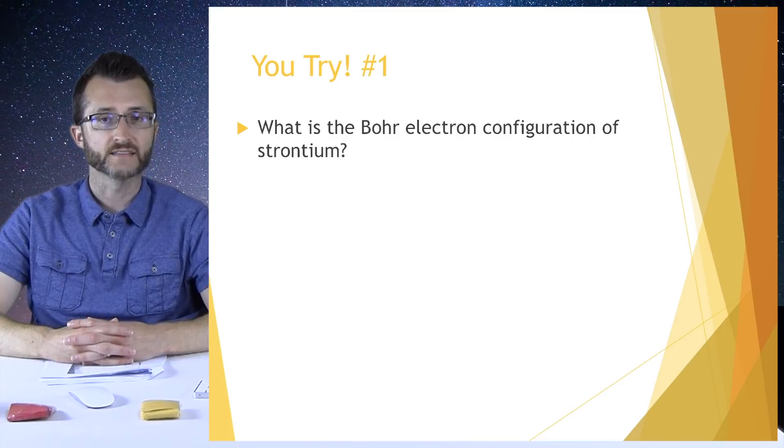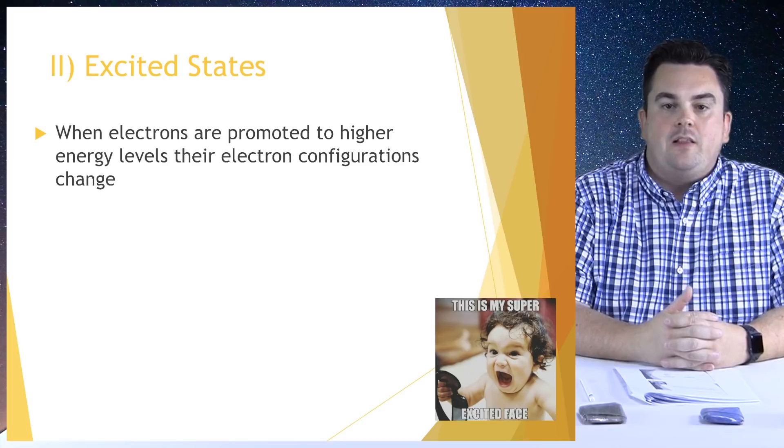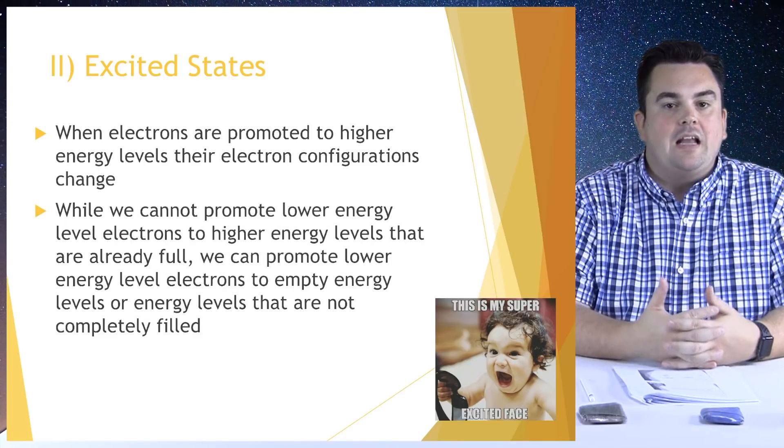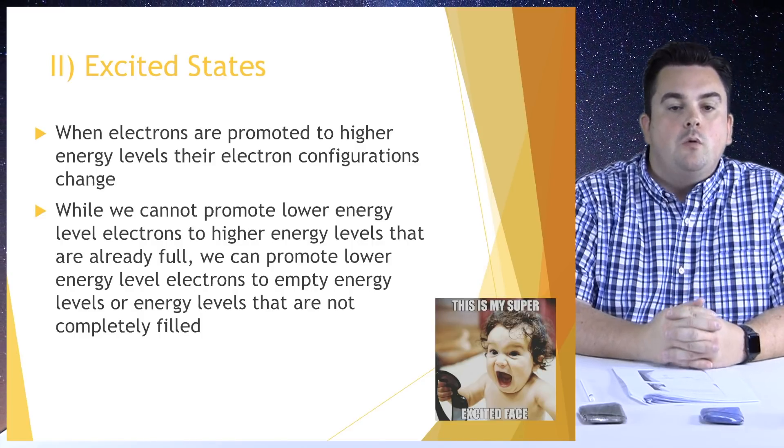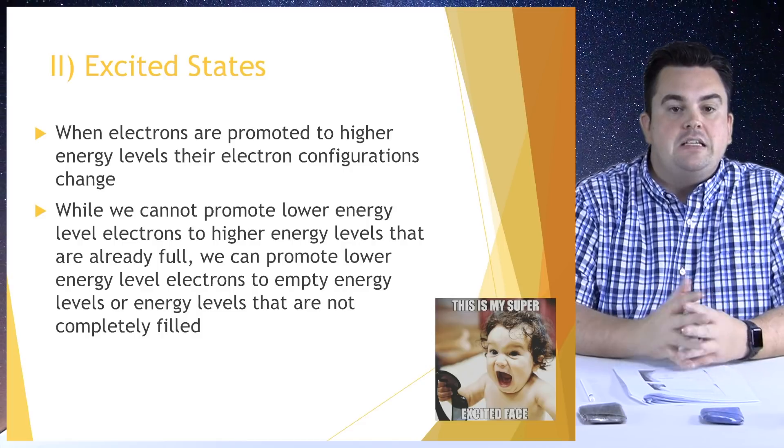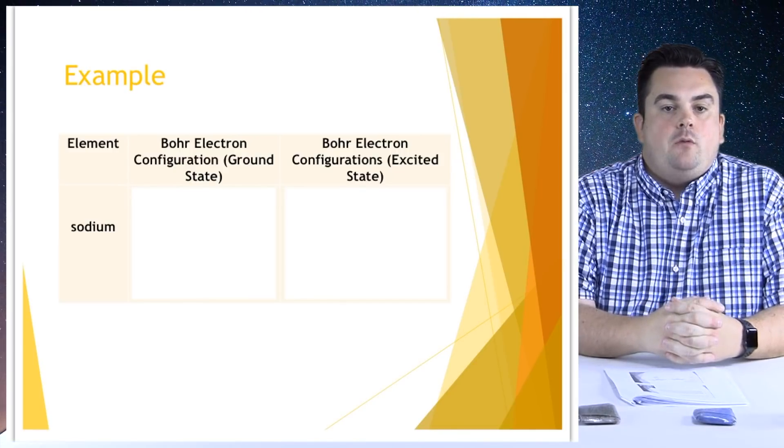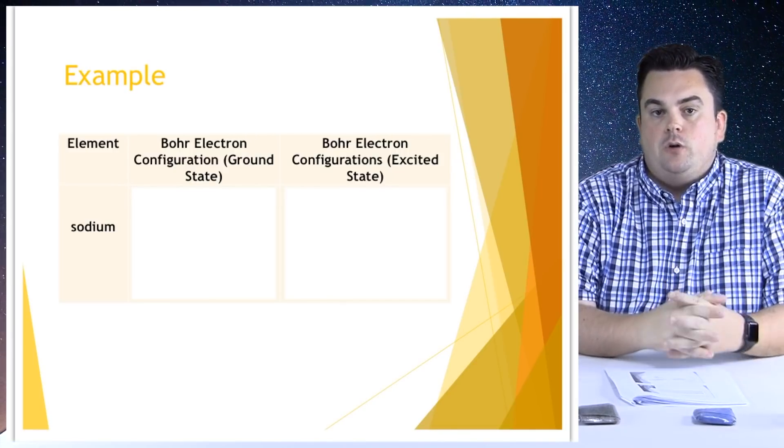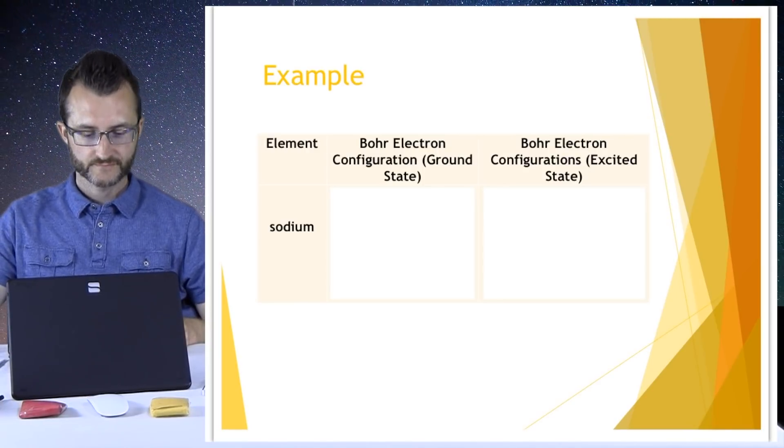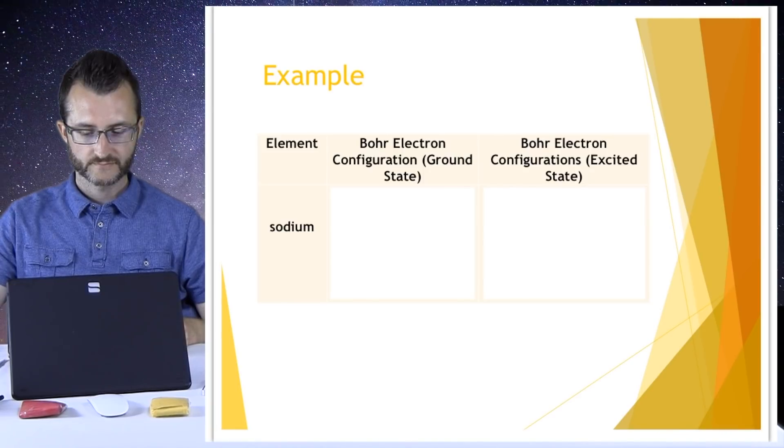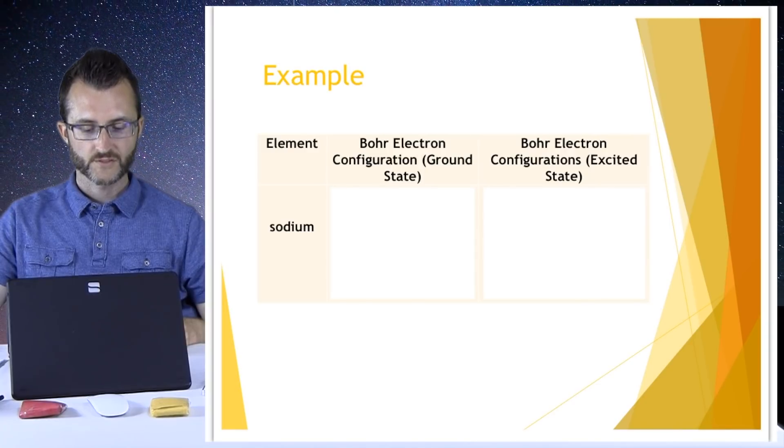You're going to need to take out your periodic tables because you're going to need them for this practice problem and throughout the rest of the lesson. Excited states. When electrons are promoted to higher energy levels, their electron configurations change. While we cannot promote lower energy level electrons to higher energy levels that are already full, we can promote lower energy level electrons to empty energy levels or energy levels that are not completely filled. We're going to do an example here, and we're going to ask you to follow along.